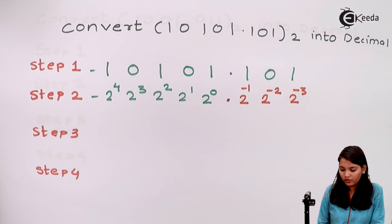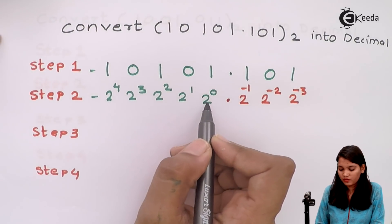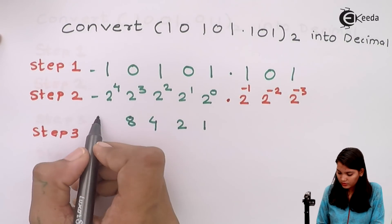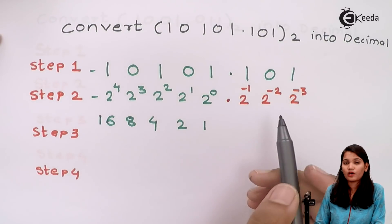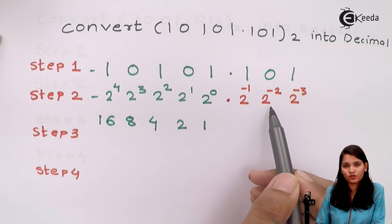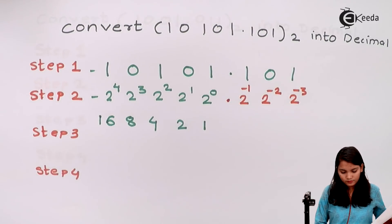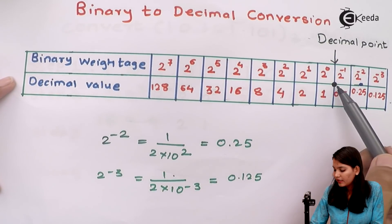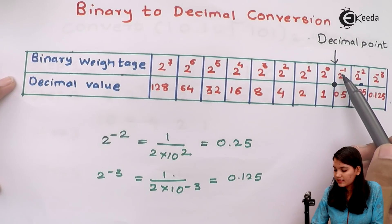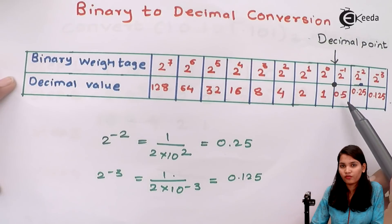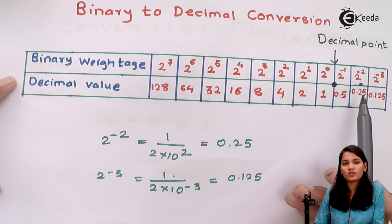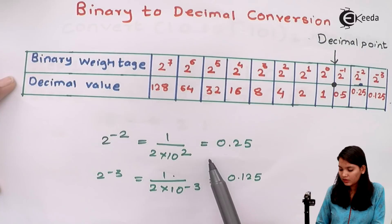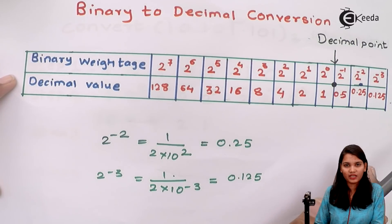Now let's write down the weightage values. 2 raise to 0 is 1, 2 raise to 1 is 2, 2 raise to 2 is 4, up to 2 raise to 4. For the fractional part: 2 raise to minus 1 gives 0.5, 2 raise to minus 2 gives 0.25 (that is 1 divided by 2 raise to 2, which equals 0.25), and likewise we convert the remaining weightages.